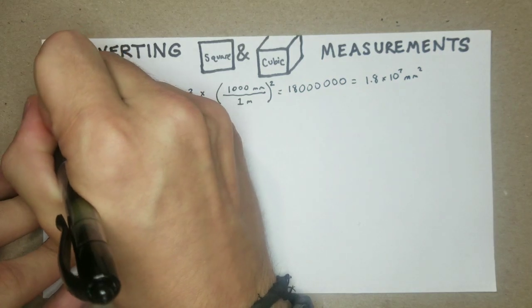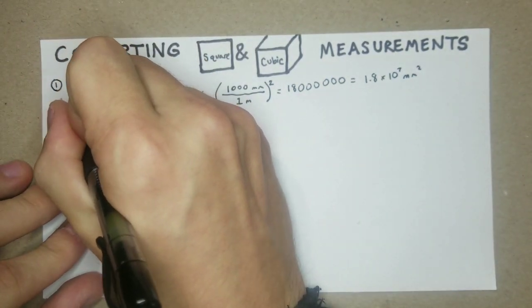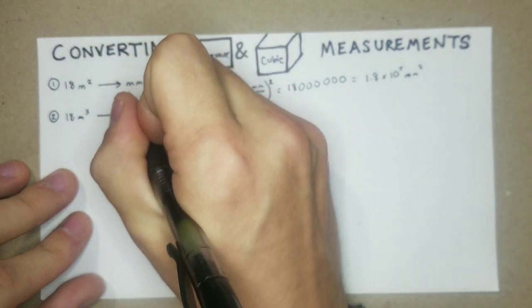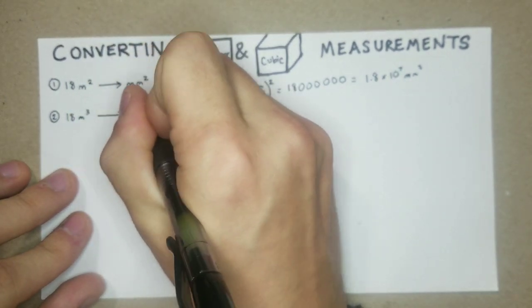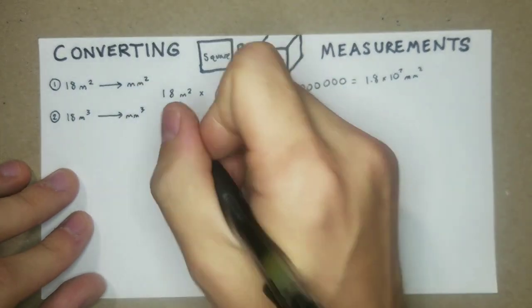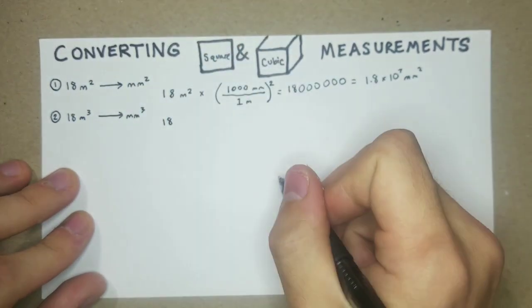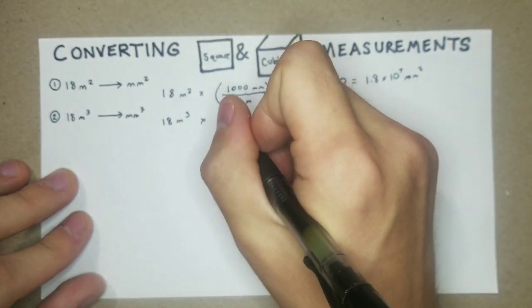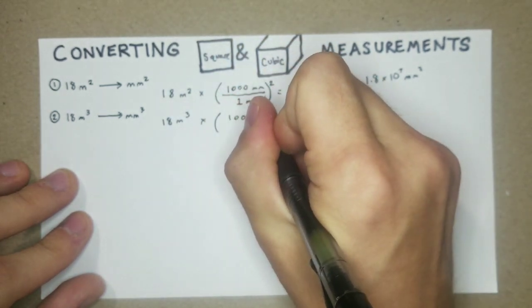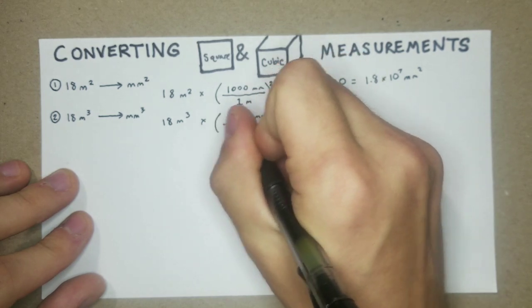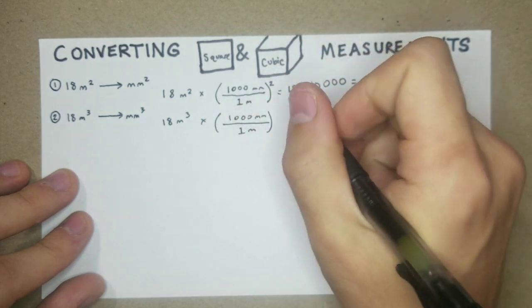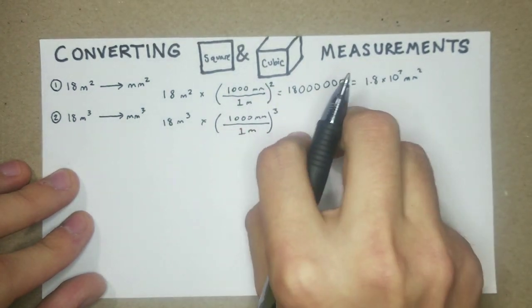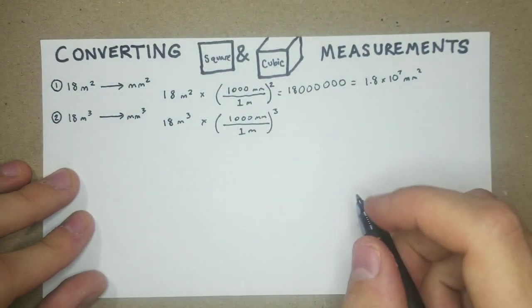Do another one pretty simple like that. 18 cubic meters, and I'm just going to try to get it into cubic millimeters. So exactly the same basis here. 18 meters cubed times, we know again there's a thousand millimeters per one meter. This time we're going to cube this. Again, you can just put this fraction three times in a row, but this probably is the simplest way.